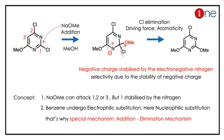The answer lies in the addition-elimination mechanism. Here the nucleophile is the reactant. Normally benzene undergoes electrophilic substitution, but here nucleophilic attack occurs because of extra stability provided by nitrogen. The nucleophilic attack can happen at position 1, 2, or 3.